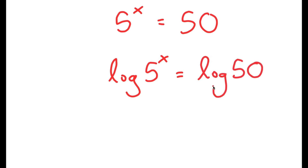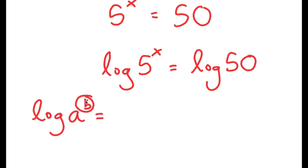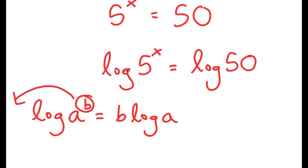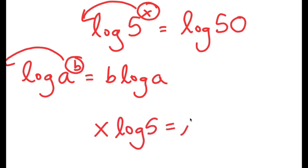I'm going to take the log on both sides, so I get log of 5 to the power of x is equal to log 50. Logarithms have a special property that states if I have something in the form log a to the power of b, I can move the exponent b to the front, so this turns into b times log a. So I can move x to the front, and now I get x times log 5 is equal to log 50.